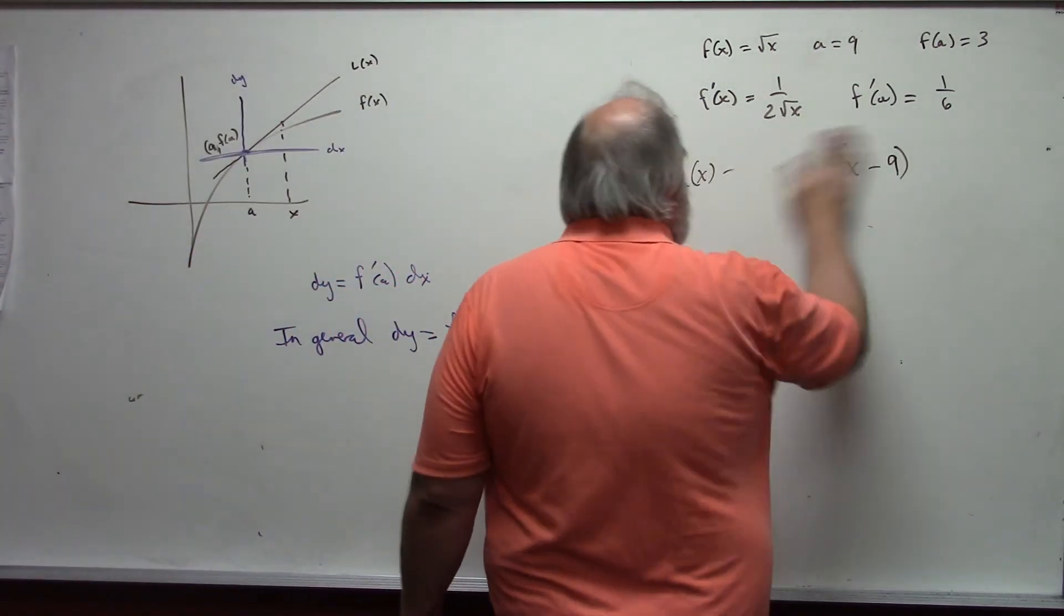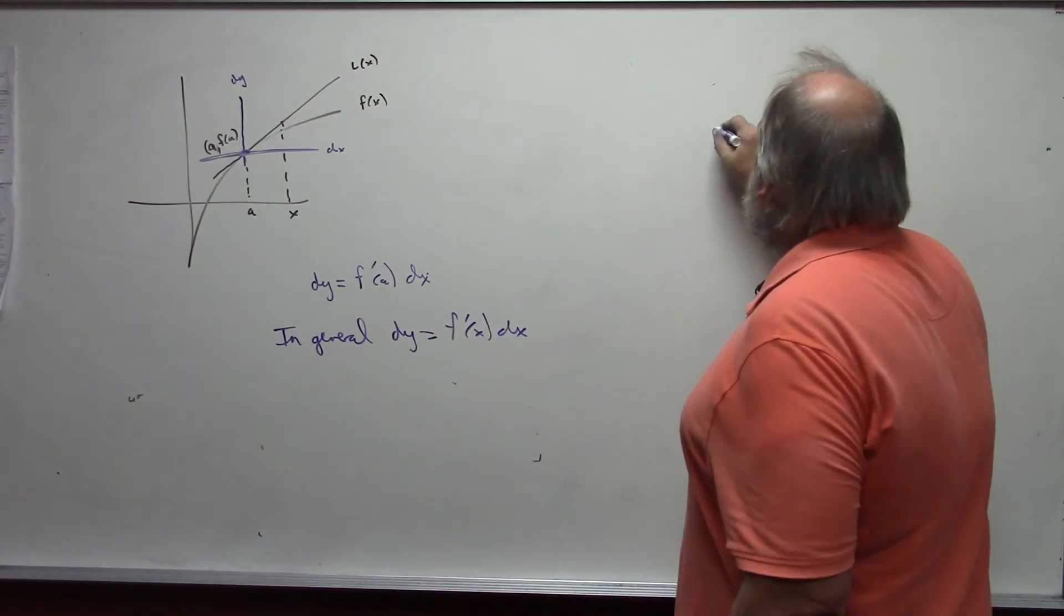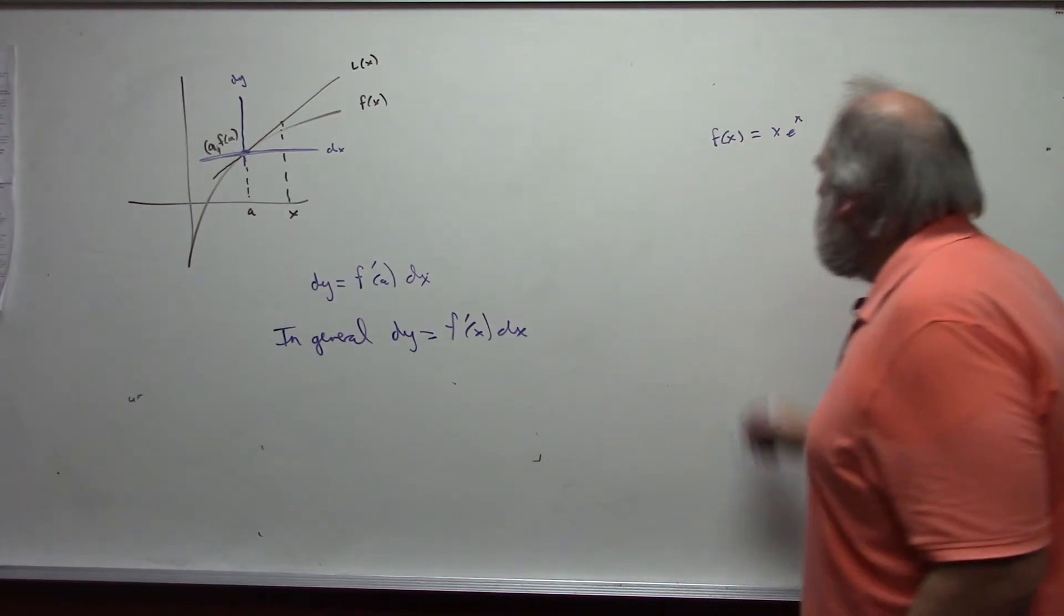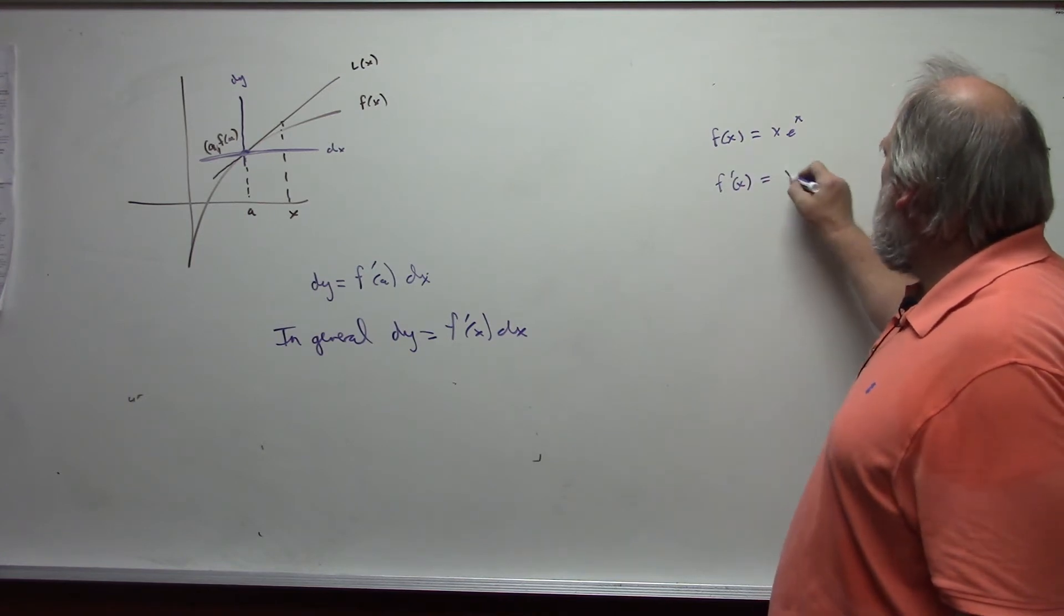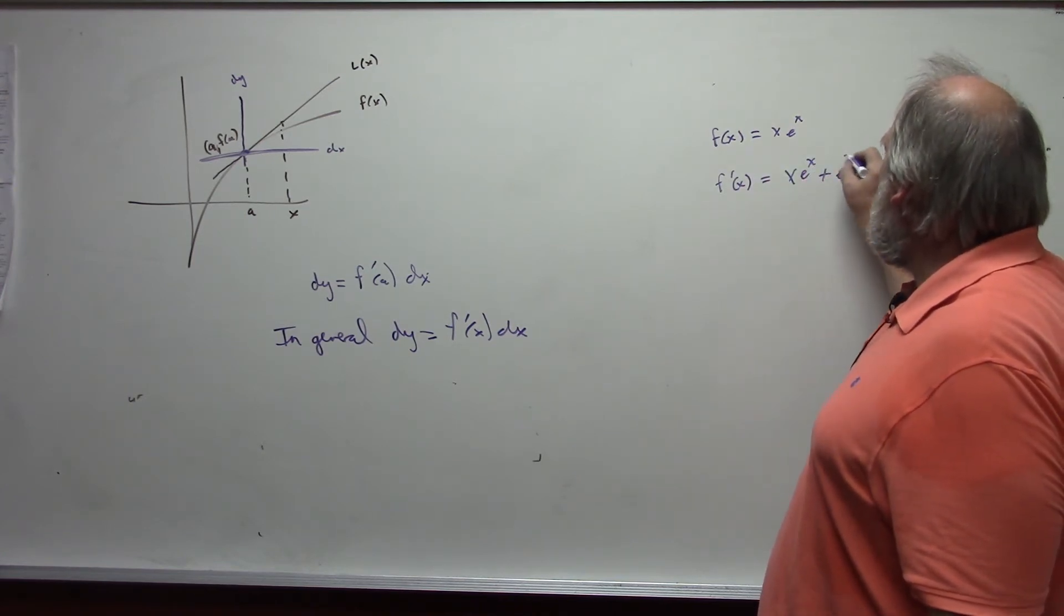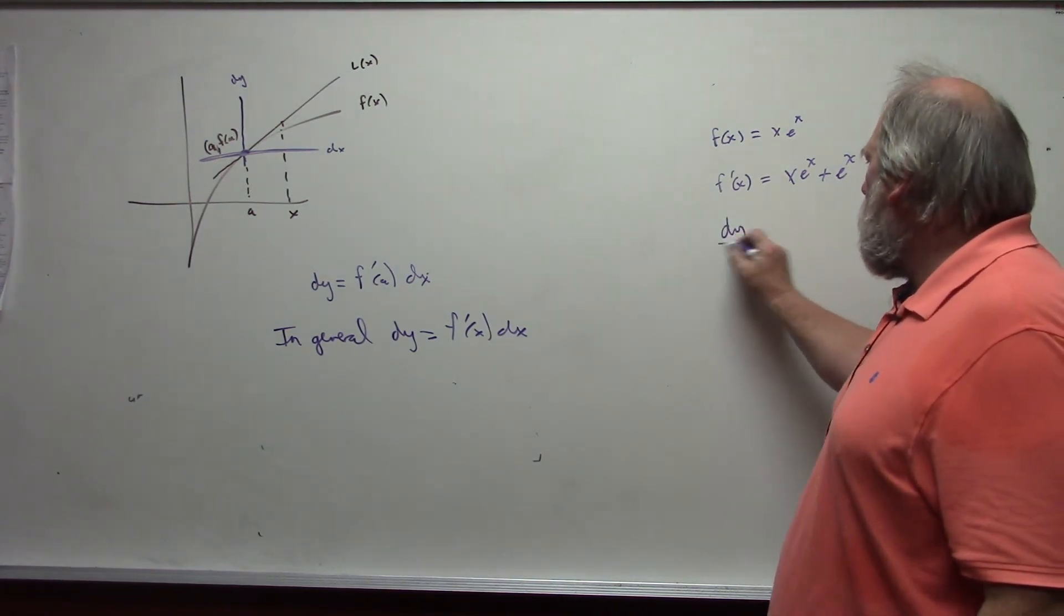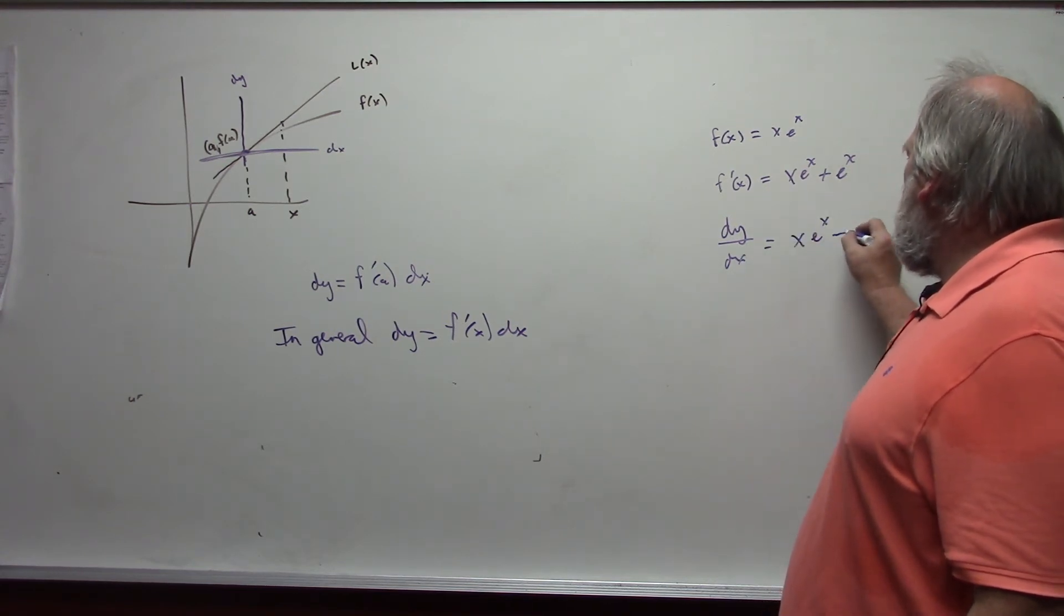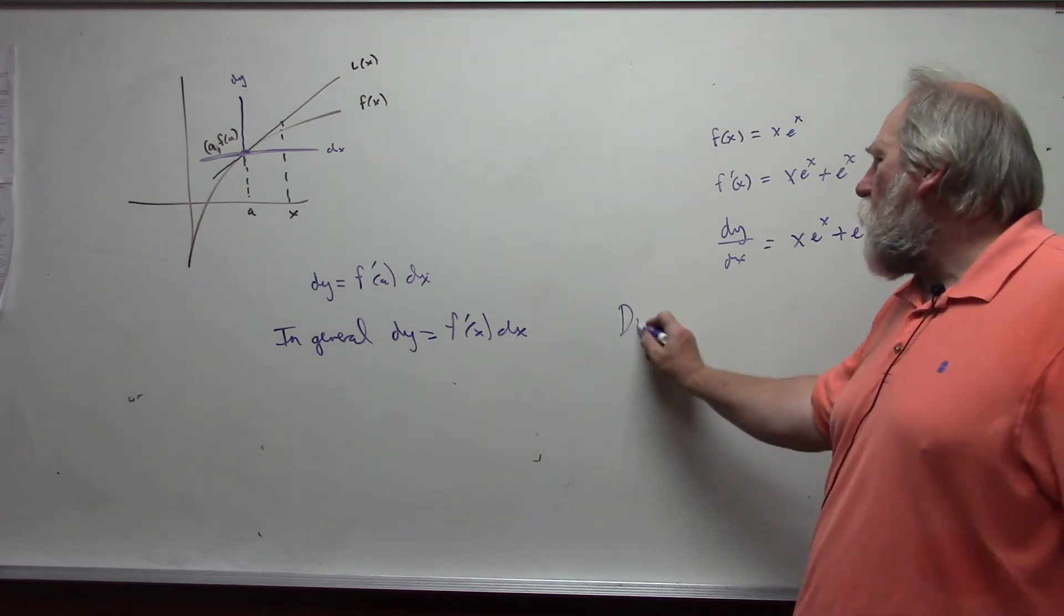Or in general, dy is equal to f prime of x dx for any particular value x that we want. And so if I have, for example, f of x is equal to x e to the x, the differential form, my derivative f prime of x is x e to the x plus e to the x - this is product rule. And so then rather than doing that, written the other way...